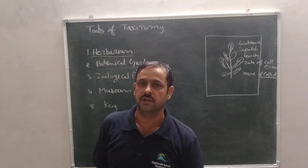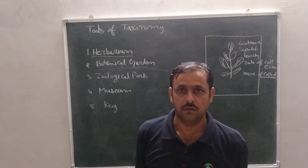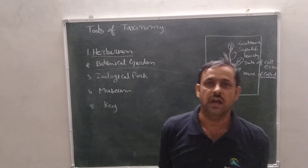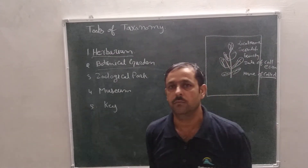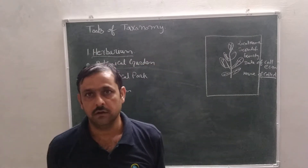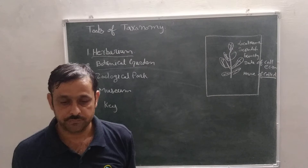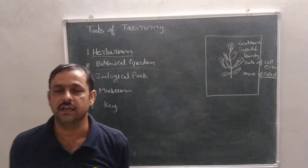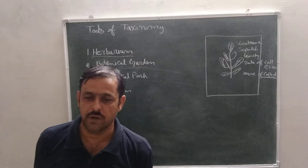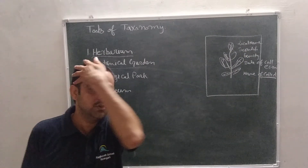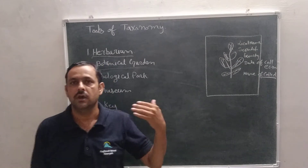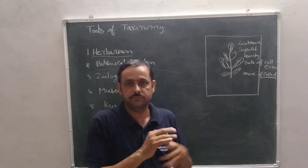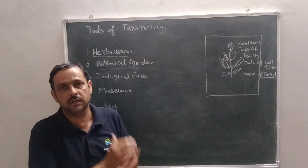Next is botanical garden. As you know, nature always attracts humans — we keep small plants in our homes too. Similarly, for the purposes of classification, identification, and nomenclature, many institutes have established botanical gardens. From there we can obtain proper and live knowledge of plants. The largest botanical garden is the Royal Botanical Garden, Kew, in England. In India, the Indian Botanical Garden is located in Howrah. Some plants are conserved in-situ and some ex-situ. Areas with high plant density are announced by the government as botanical gardens, where plants are protected.